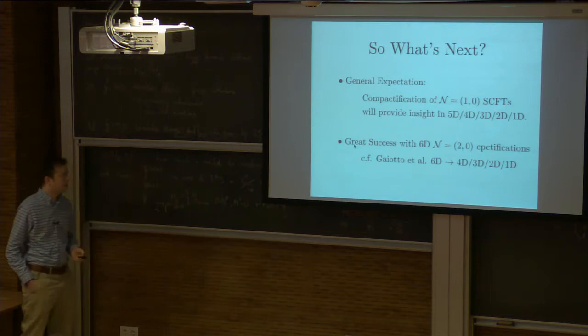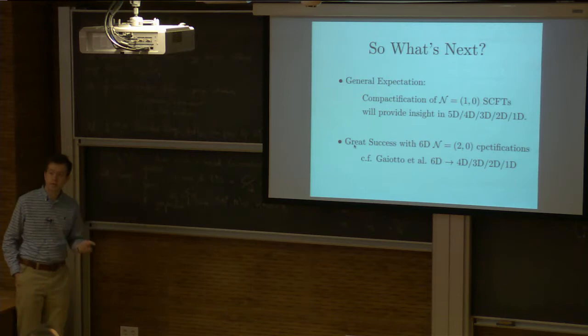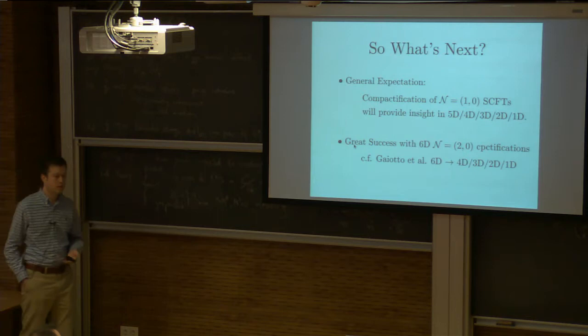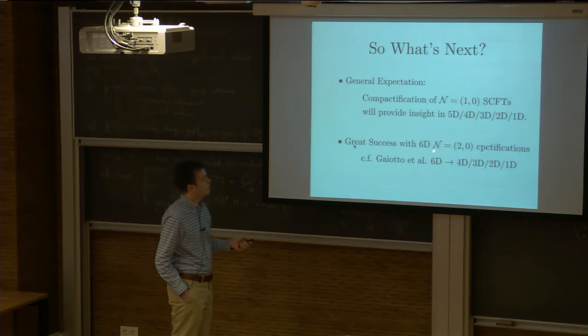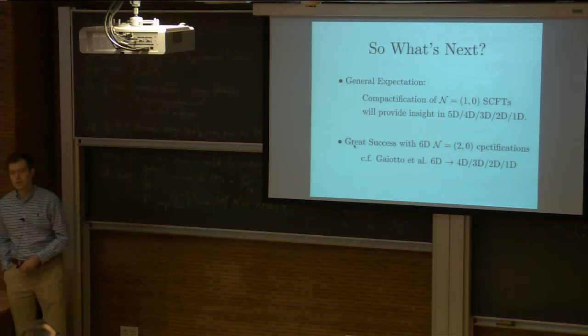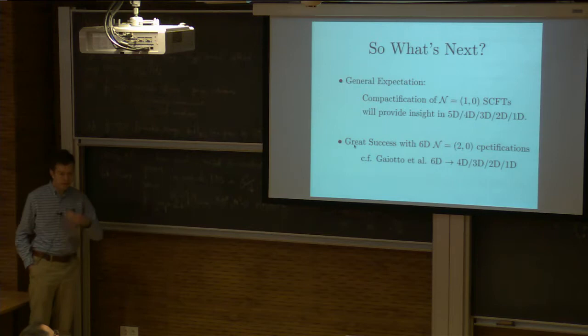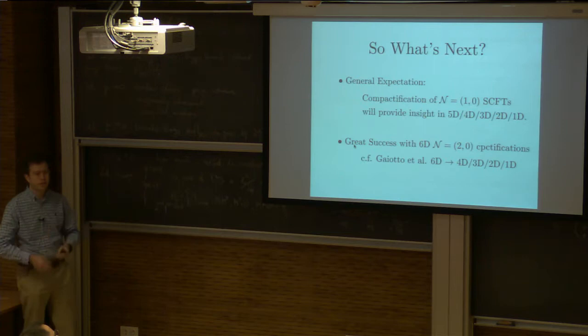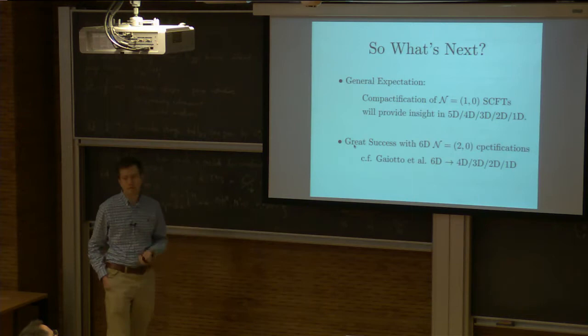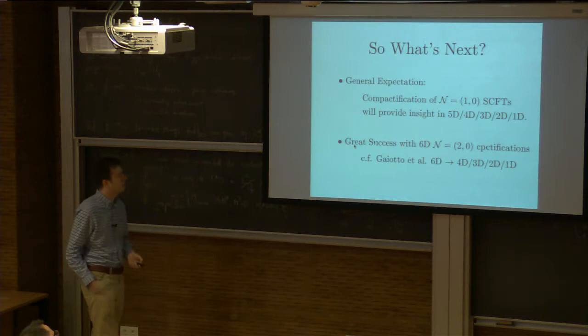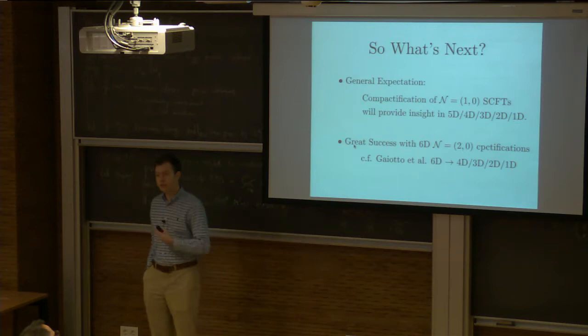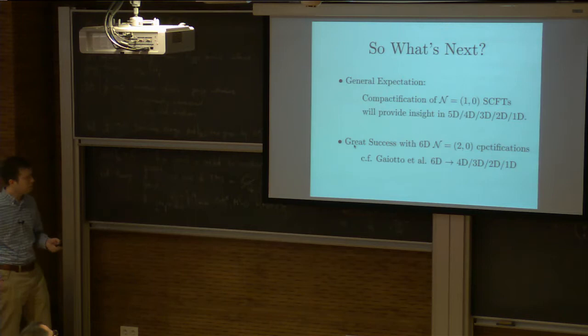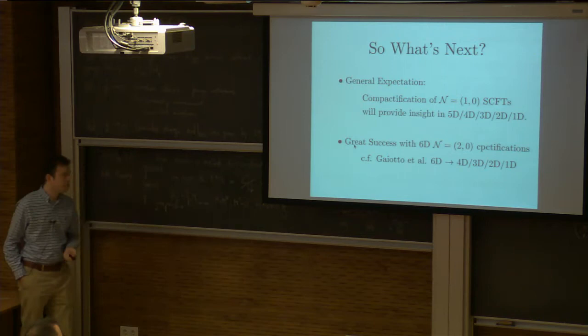We can continue to study things in 6D, but we can also consider what happens when we compactify those theories to lower dimensions. This program has had great success in the context of theories with higher supersymmetry. For 2,0 theories — 6D (2,0) theories — there's the ADE list of them, and when you compactify them you produce insight into lower-dimensional theories. The most famous example is 4D N=4 Yang-Mills, where S-duality just becomes a geometric operation involving interchange of A and B cycles on the T2.